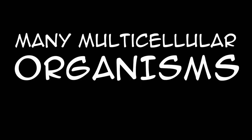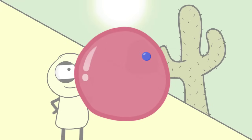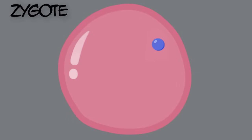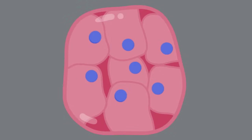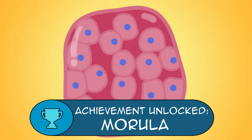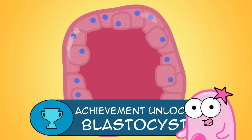Many multicellular organisms, like a plant or you, come from a fertilized egg cell. Let's take a look at a human fertilized egg, otherwise known as a zygote. Well, that zygote divides to make more cells, and more cells — oh look, it's a morula. And more cells — oh look, it's a blastocyst now.